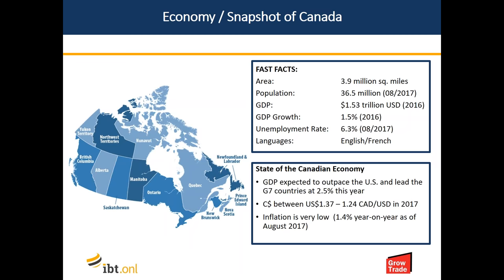Unemployment is at 6.3%, which is relatively low. Of course, we are a bilingual country at a federal level, which is interesting for companies selling retail products, especially food products, as all packaging must be in both English and French. The Canadian economy is quite strong right now, looking to potentially outpace the U.S. and lead the G7. The Canadian dollar has fluctuated but has been as low as 1.24. Inflation has been consistently low — the Bank of Canada likes to keep it within a 2% range, and we've been at 1.4% as of August.